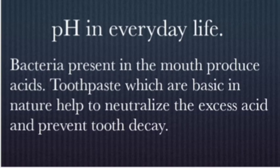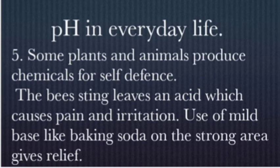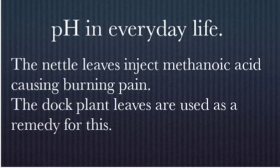Some plants and animals produce chemicals for self-defense. For example, ants and honeybees, when they bite you, release an acid — this acid causes pain. Nettle leaves, if you accidentally touch them, can inject methanoic acid (also called formic acid) into your hands, causing pain.